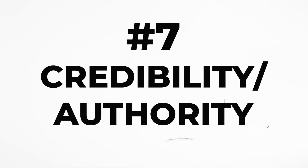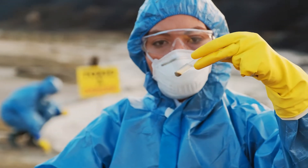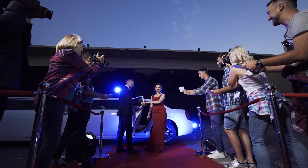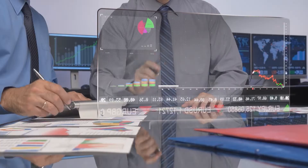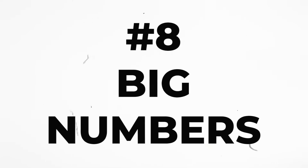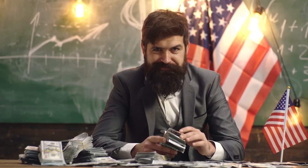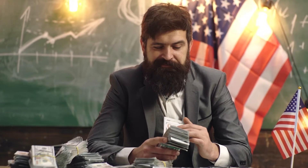Number seven is using credibility or authority — that's using experts, celebrities, or even statistics. And the last one is big numbers. Use big numbers. We humans like big numbers, big prices. 'I earn 100 million dollars in a week' — that always gets attention.